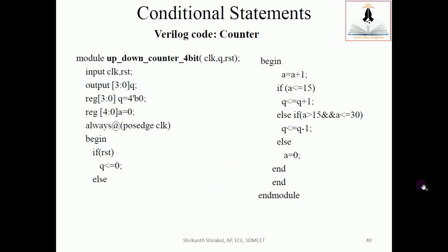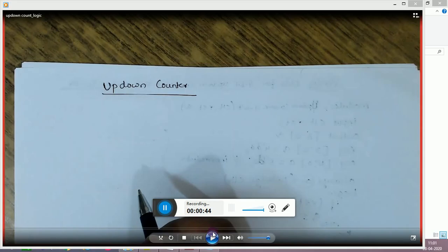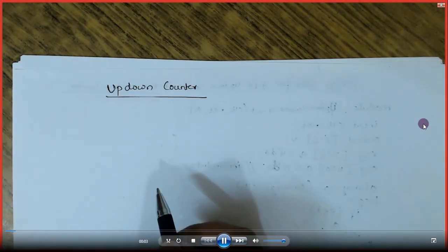The 4-bit up-down counter code can be written in two ways. One is with an additional input command that controls whether to count up or count down. The other way is to design an up-down counter which does up counting and down counting automatically. We will explain the working of the up-down counter using paperwork.